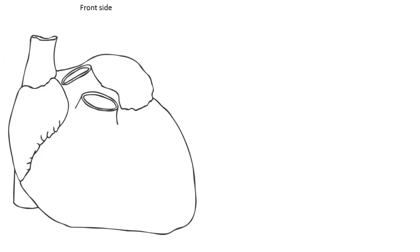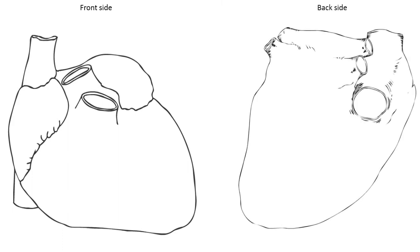As you can see, this is the front side or anterior aspect of the heart, which is on the left side of the screen, and on the right side of the screen there is the back of the heart, which is also known as the posterior inferior surface of the heart. The reason behind putting these two pictures side by side is to make it easier for you to understand the actual course of the coronary arteries.